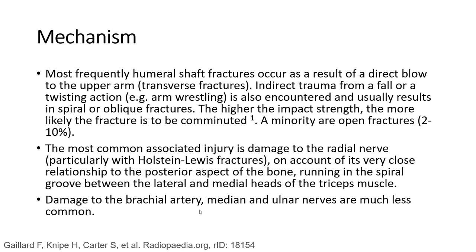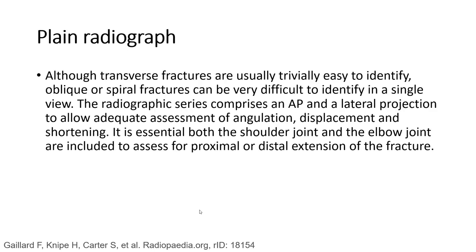Injury to the brachial artery, median, and ulnar nerve are much less common. Although transverse fractures are usually trivially easy to identify, oblique or spiral fractures can be very difficult to identify in a single view. The radiographic series comprises an AP and a lateral projection to allow adequate assessment of angulation, displacement, and shortening. In addition, both the shoulder joints and the elbow joints are included to assess for proximal or distal extension of the fracture.